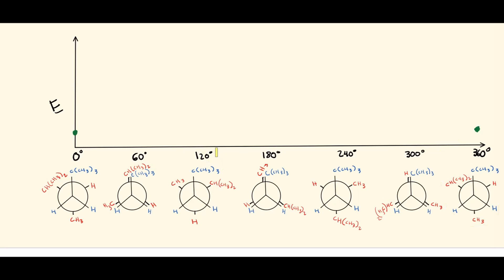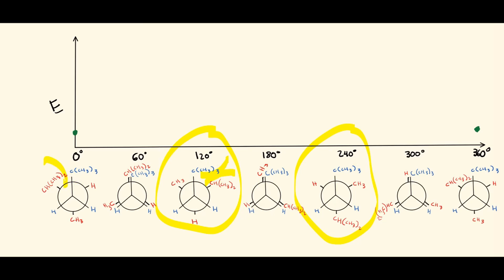The staggered conformer at 120 degrees has the same gauche interaction between the tert-butyl and isopropyl groups that we saw at 0 and 360 degrees, but it also has an additional gauche interaction between the methyl group and the tert-butyl group. With two areas of steric hindrance, this conformer is less stable than the ones at 0 and 360 degrees, so we plot it higher.